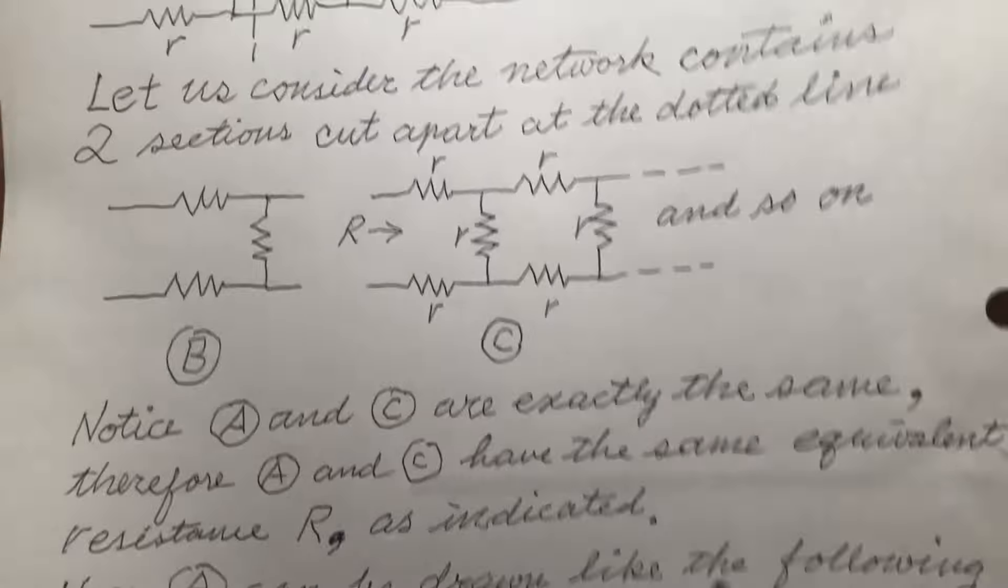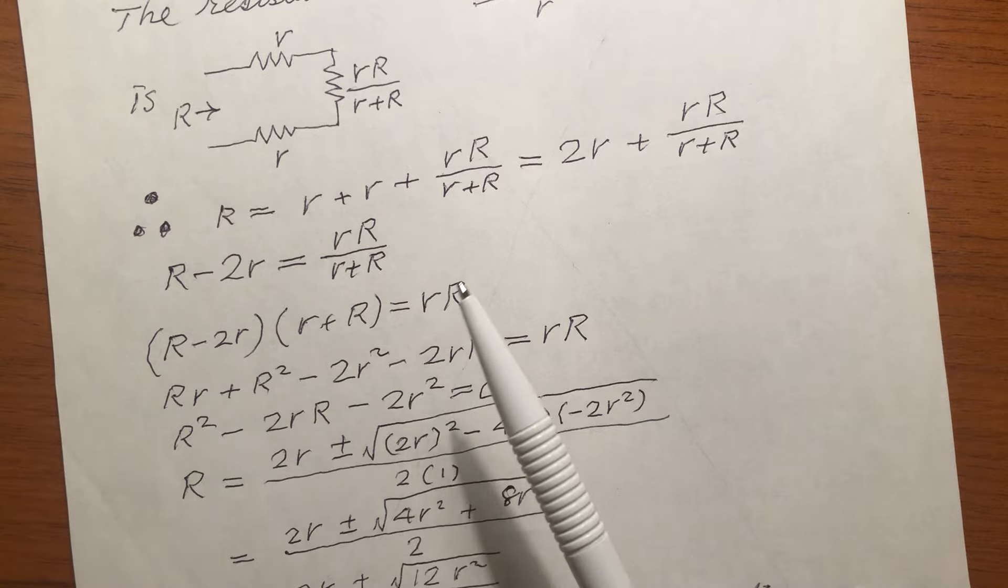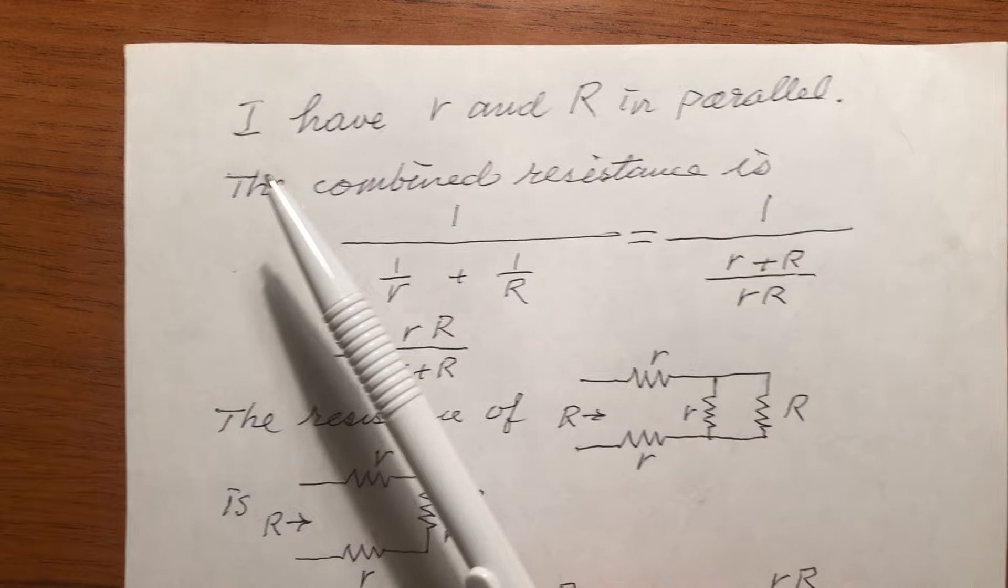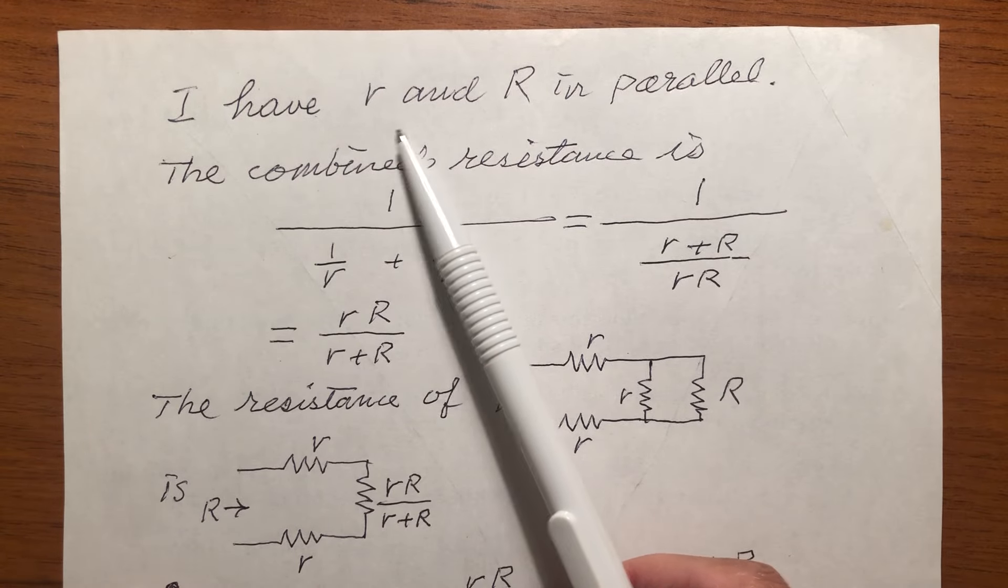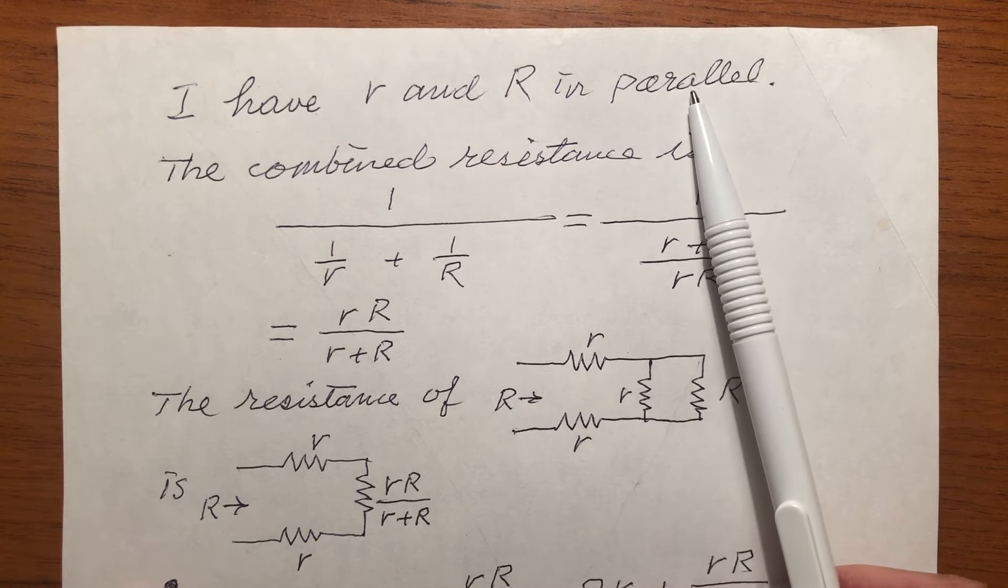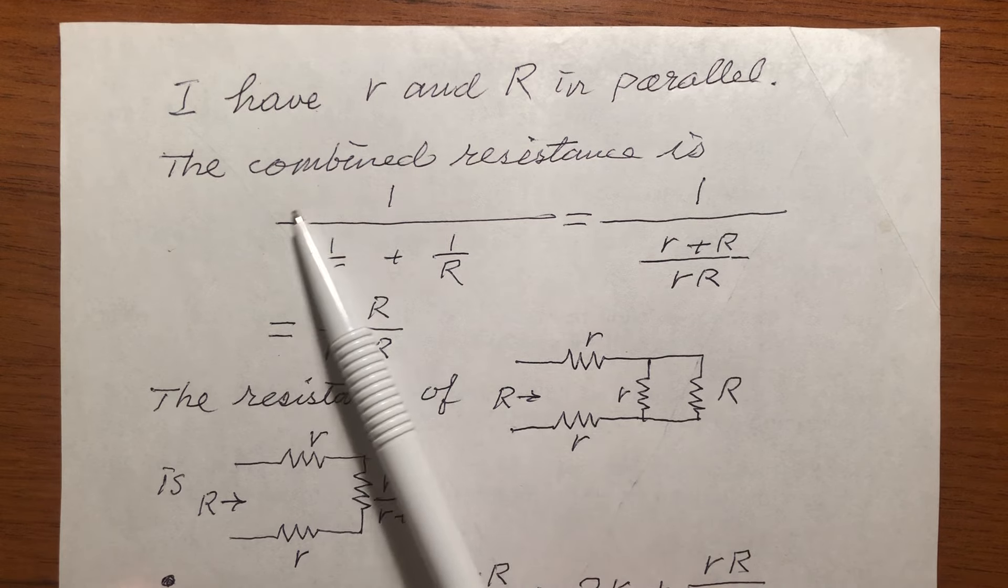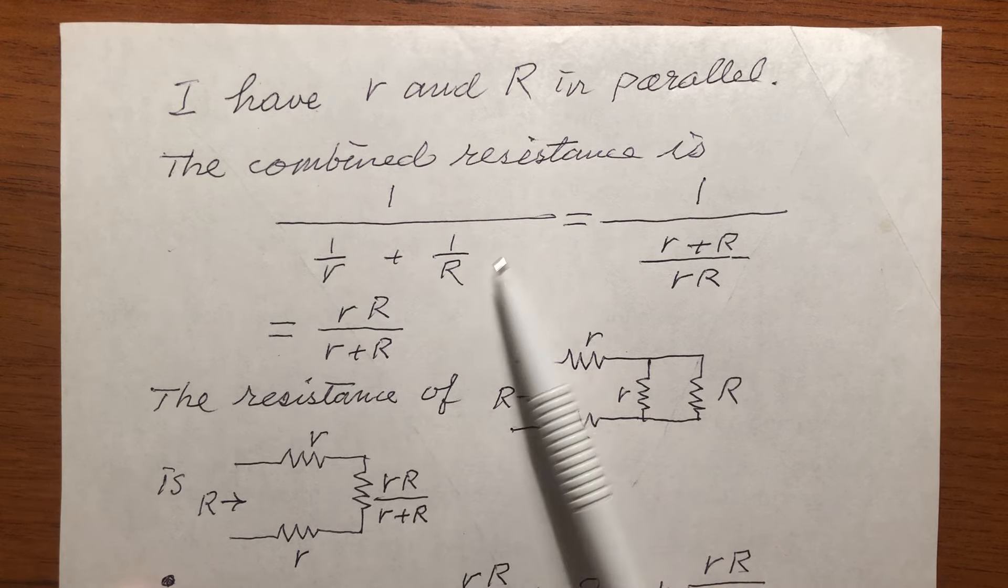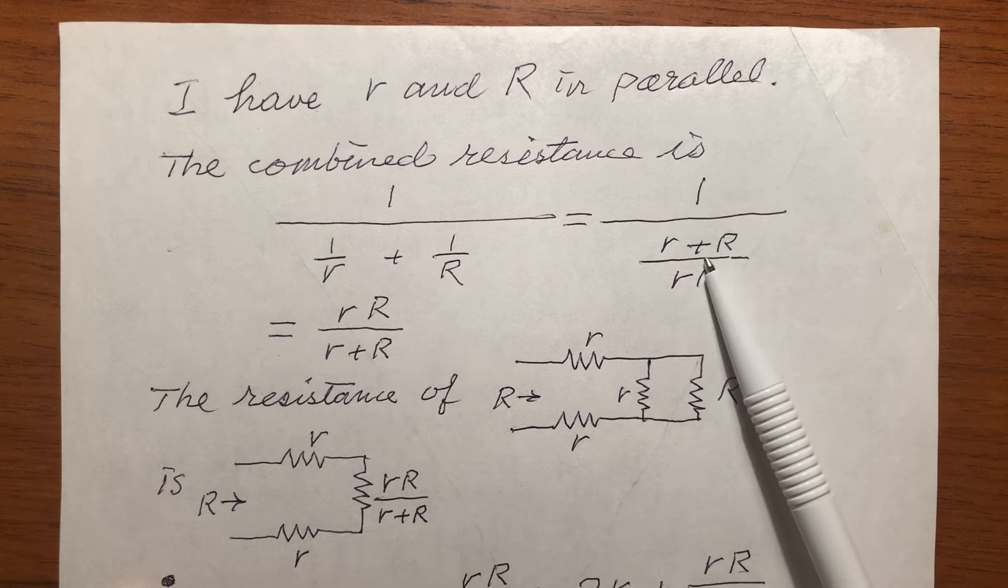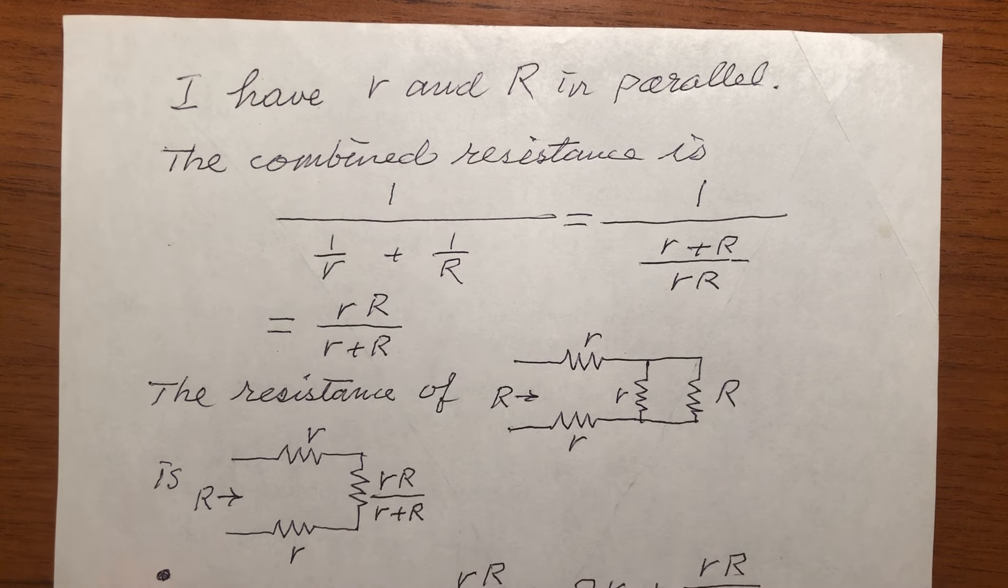So let's continue. What is the resistance, equivalent resistance, of two resistors in parallel? Small r and capital R in parallel. What is the equivalent resistance? This is the formula. The equivalent resistance is given by this formula. Common denominator, and one over, we flip it. So that is the equivalent resistance.